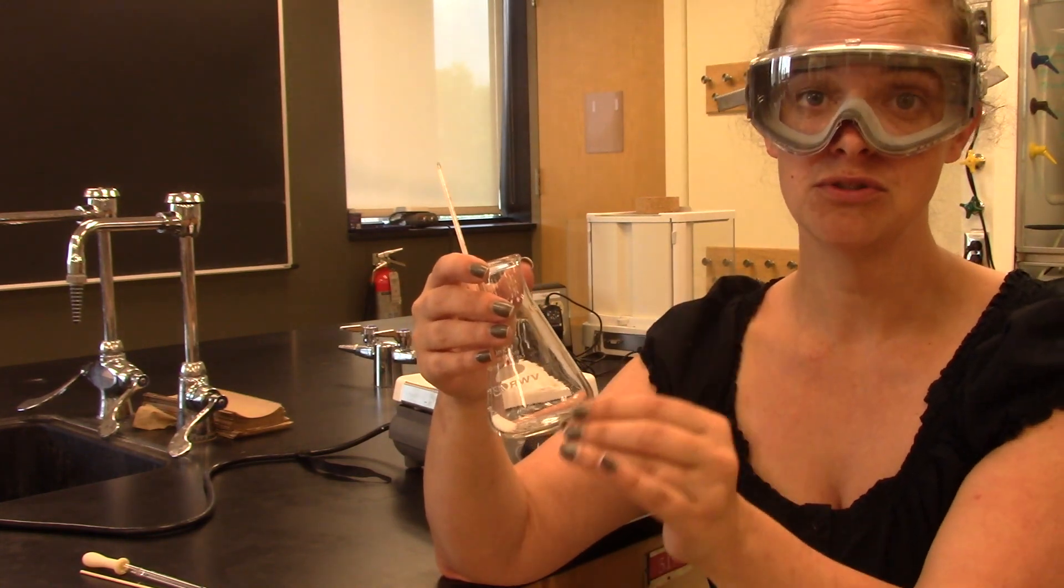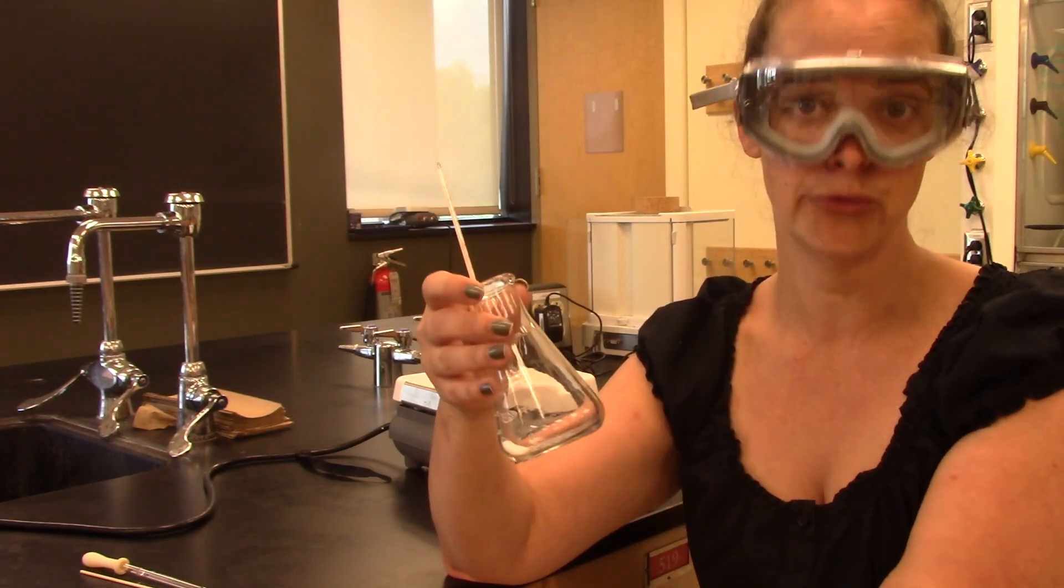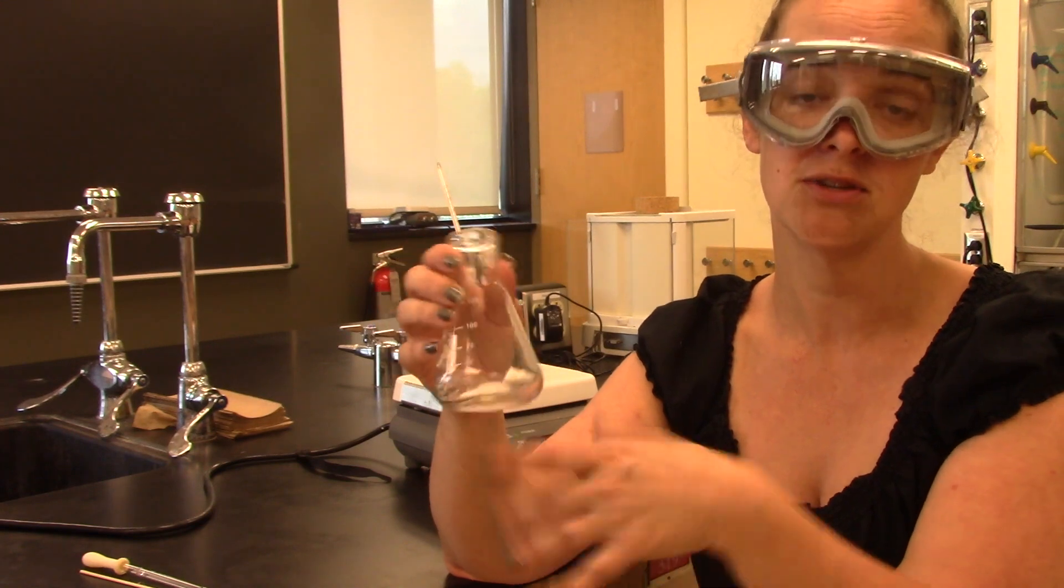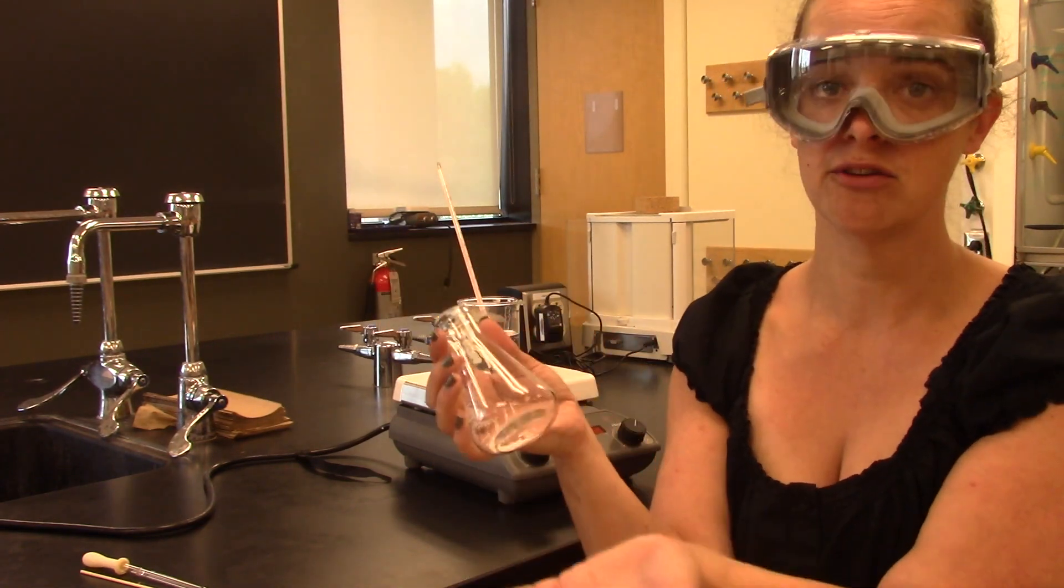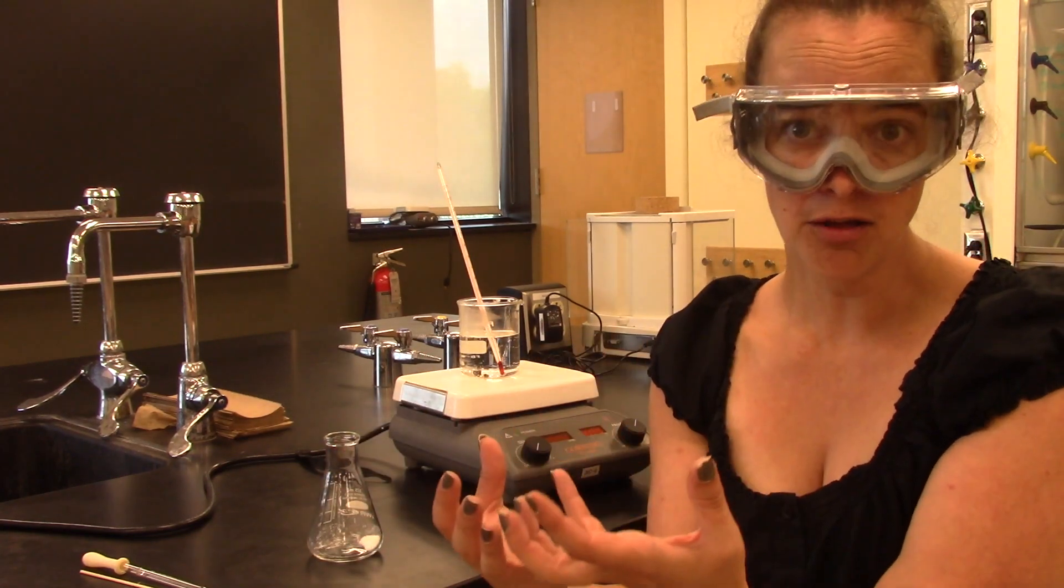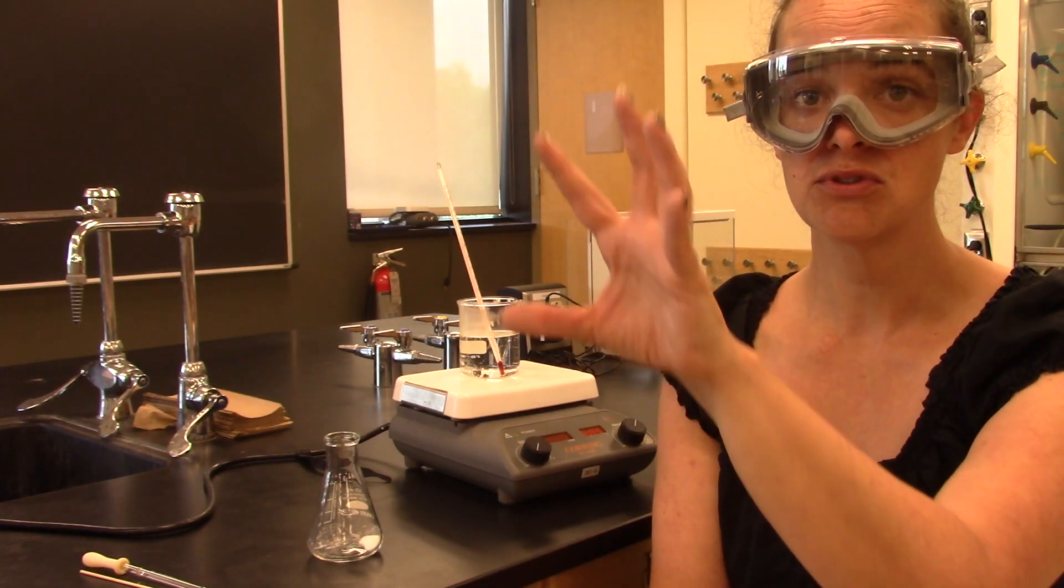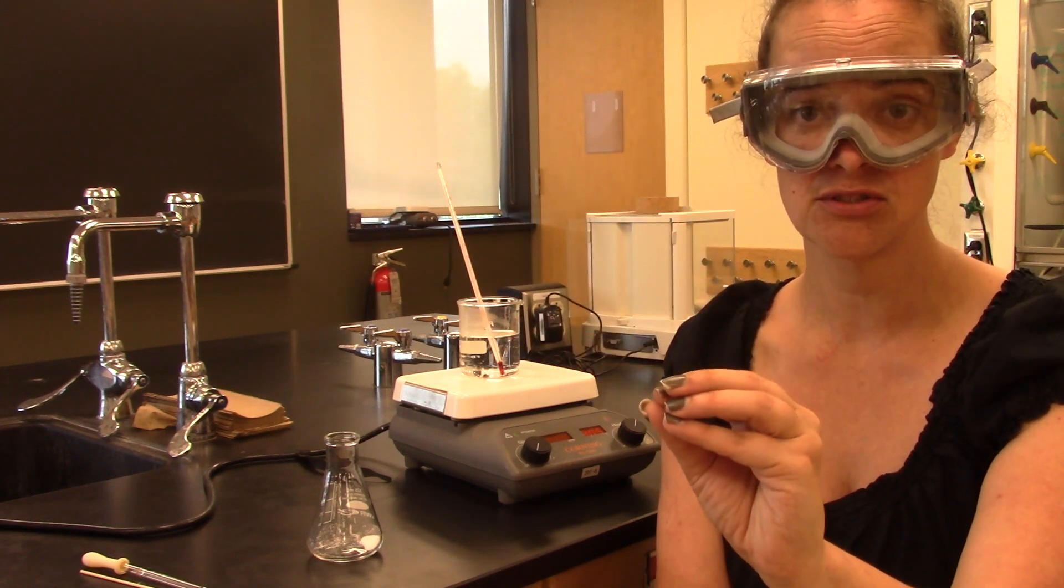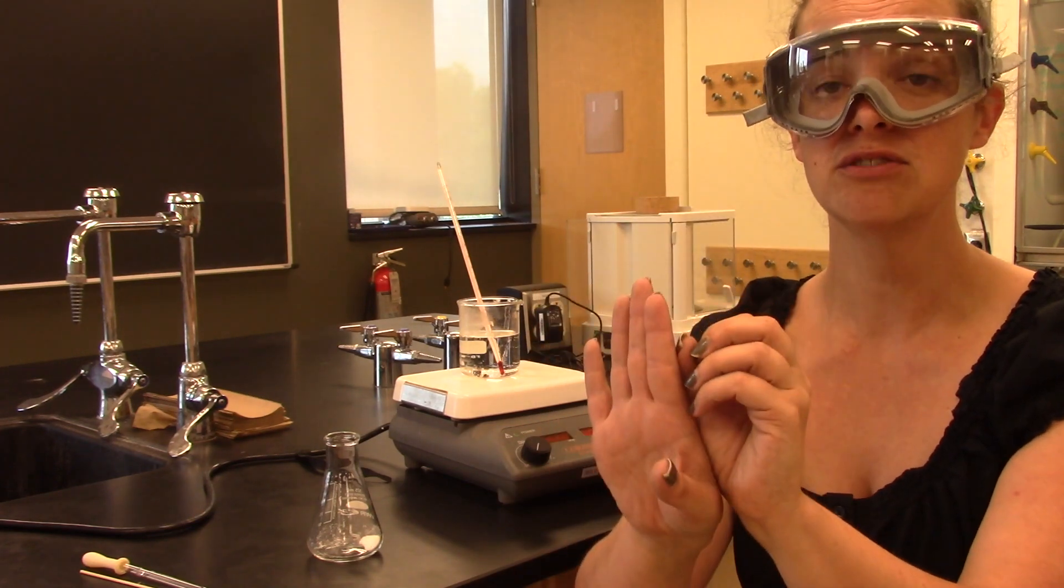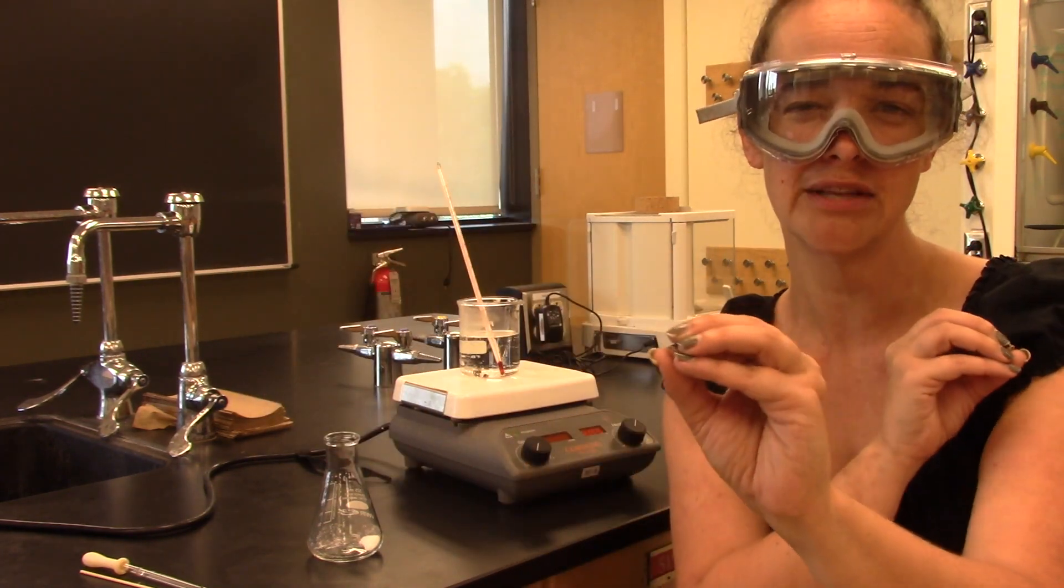The slower you do this process, the finer the phthalic acid crystals will be, or the crystals of whatever it is you're trying to recrystallize, and the purer your crystals will be. Because what we're doing is we're relying on a principle called exclusion. And that principle states that when you have a mixture of compounds and you're recrystallizing one of them, when the molecules are forming their solid network, the crystalline structure, if you do it slowly enough, any impurities that are floating around in the solution are going to basically be pushed away.